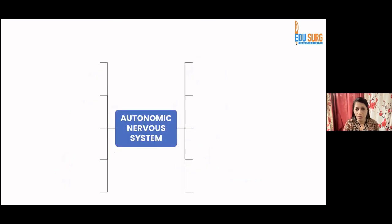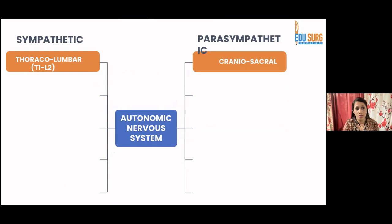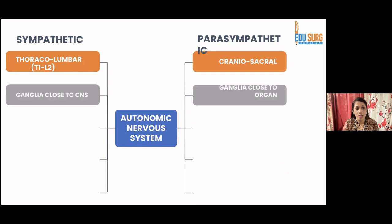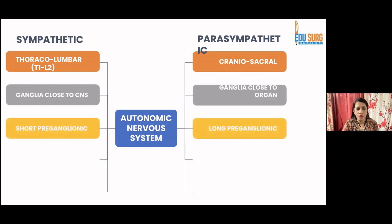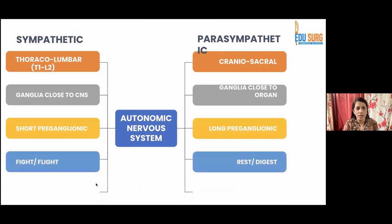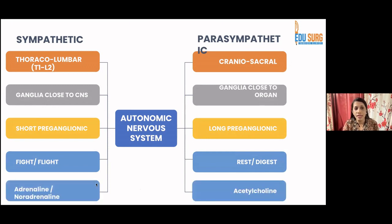This is the autonomic nervous system. Let's see the differences between the sympathetic and parasympathetic systems. The sympathetic system lies between the thoracolumbar region, T1 to L2, while the parasympathetic is craniosacral. The ganglia are close to the CNS in the sympathetic system, while in the parasympathetic they are close to the effector organs. Sympathetic is responsible for the fight-or-flight response; parasympathetic for rest and digest. The mediators for sympathetic are adrenaline and noradrenaline, while acetylcholine is responsible in the parasympathetic system.